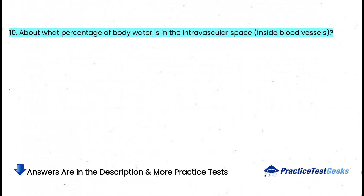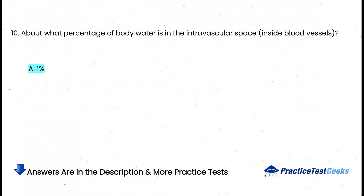About what percentage of body water is in the intravascular space? a. 1%, b. 10%, c. 20%, d. 70%.